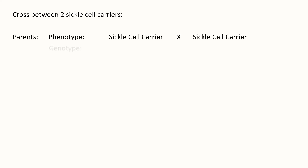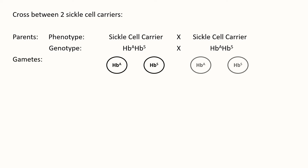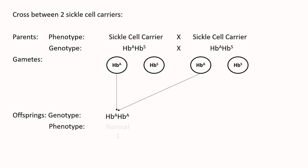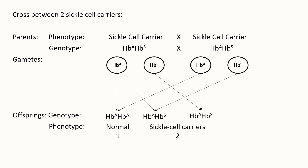Here is a cross between two sickle cell anemia carriers, both having the genotype HBA-HBS. Each of these parents produces two different gametes, which further produce offspring with three different genotypes and phenotypes. The first type of offspring has genotype HBA-HBA, meaning the offspring is neither a carrier nor anemic, but normal. The second type has genotype HBA-HBS, meaning the person is a sickle cell carrier.